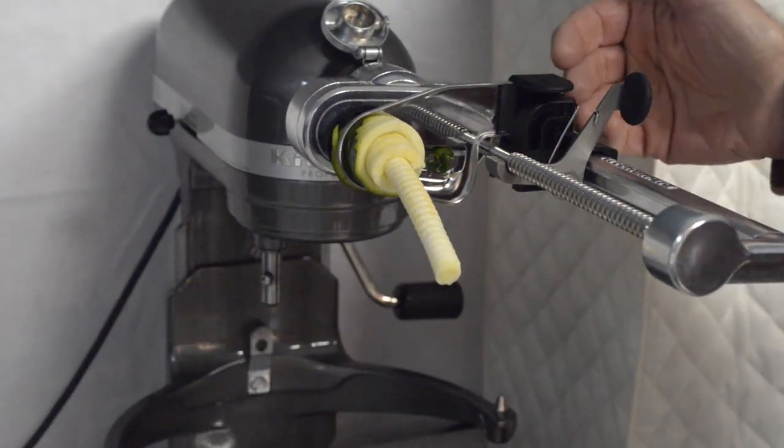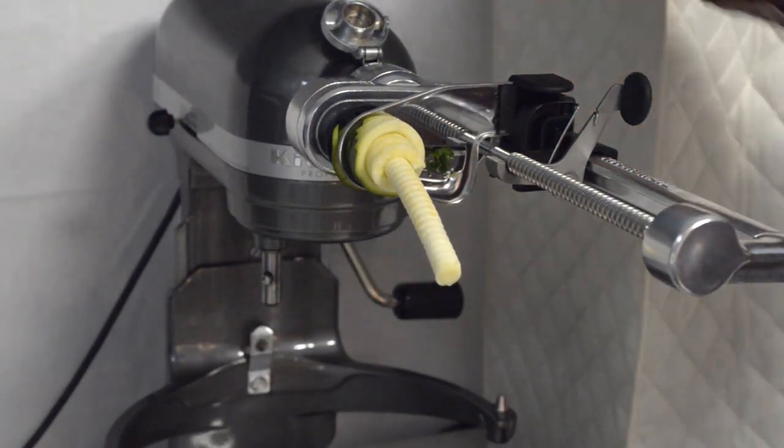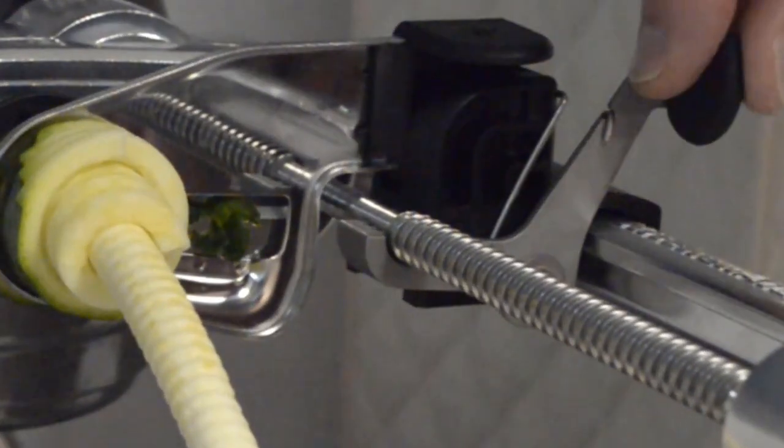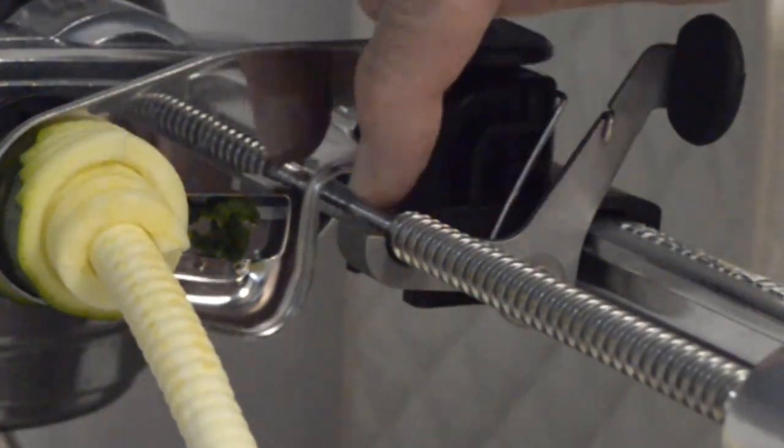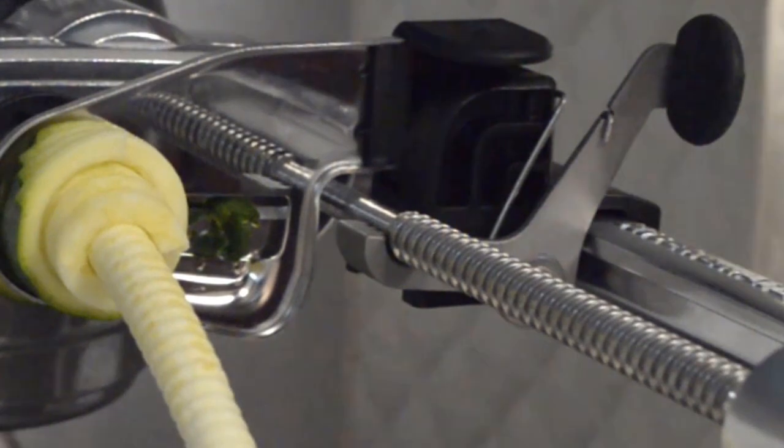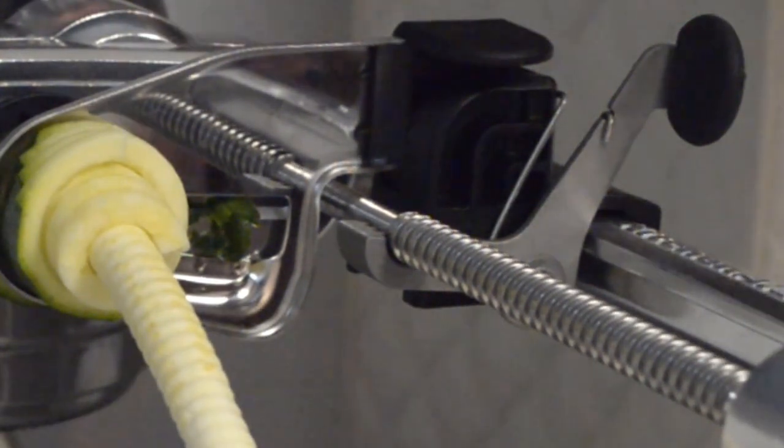And the machine will not cut itself off. What you need to do is just watch it. And when the cutter is past the gears, the cutter is not going to go any further forward. So this is where it's going to stop. So I just turn the mixer off.